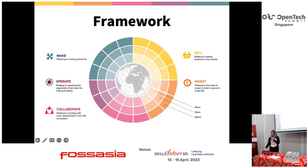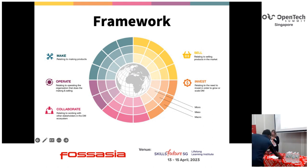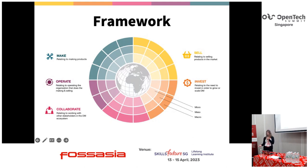These five success factors are necessary when trying to scale distributed manufacturing, either from the inside or the outside. They are: Make — making products, including having access to different inputs and skills; Sell — selling products in the market, for which you need market knowledge and market readiness.